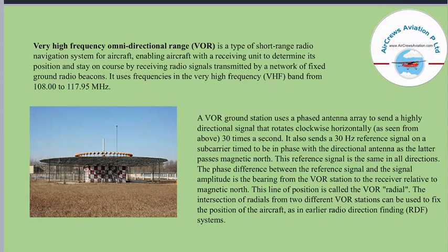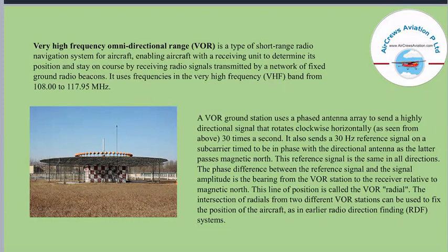A VOR ground station uses a phased antenna array to send a highly directional signal that rotates clockwise horizontally — as seen from above — 30 times a second. It also sends a 30 Hz reference signal on a sub-carrier timed to be in phase with the directional antenna as it passes magnetic north. This reference signal is the same in all directions. The phase difference between the reference signal and the directional signal is the bearing from the VOR station to the receiver relative to magnetic north. This line of position is called a VOR radial. The intersection of radials from two different VOR stations can be used to fix the position of the aircraft, as in the earlier Radio Direction Finding (RDF) systems.